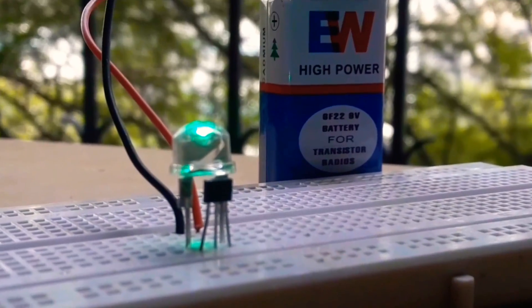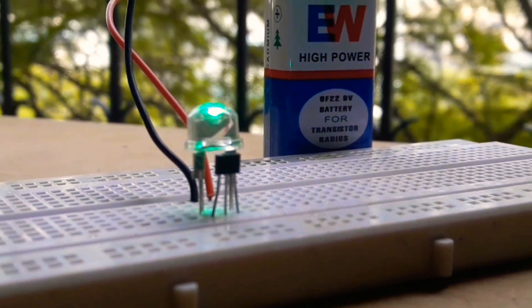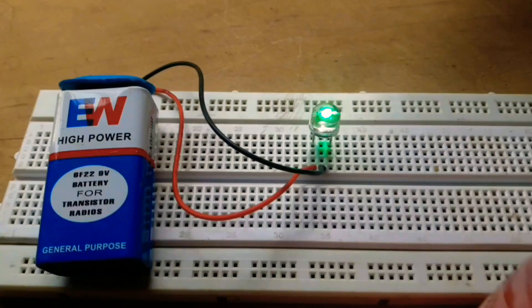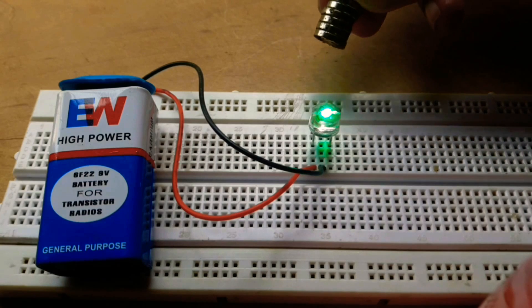Now get the magnet close to the Hall Effect Magnet Sensor and you'll notice that the LED goes off when it detects the presence of the North Pole.